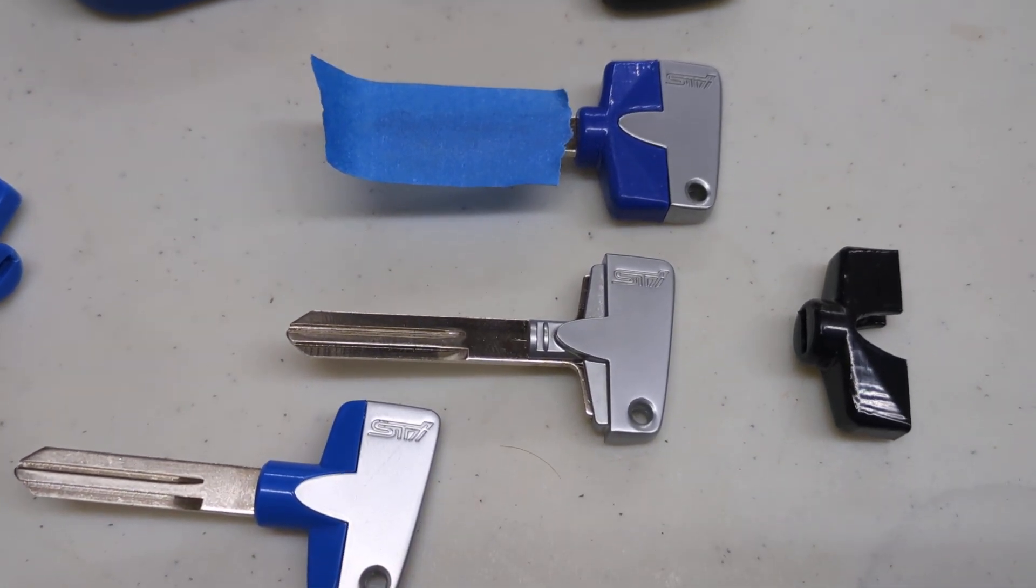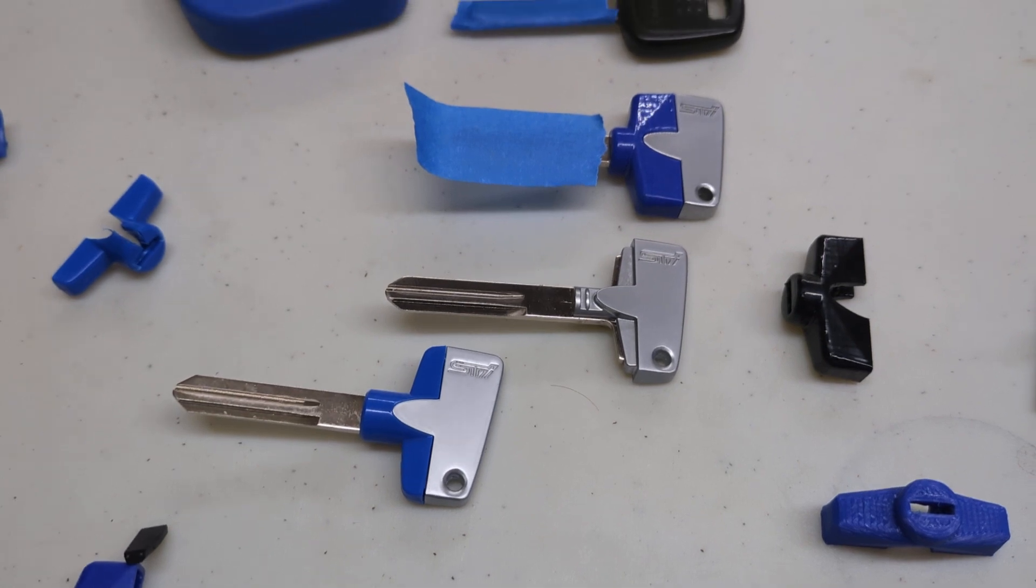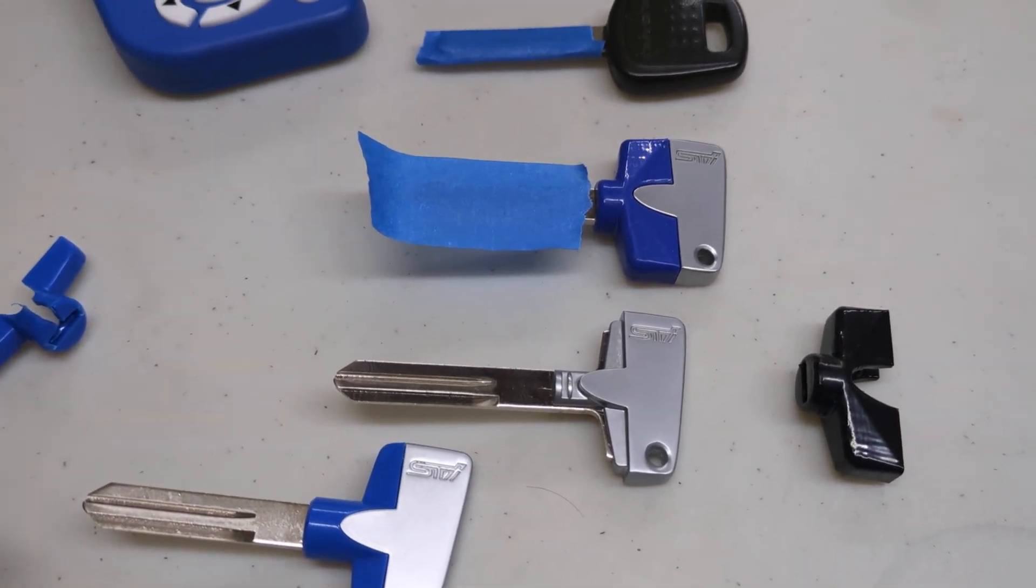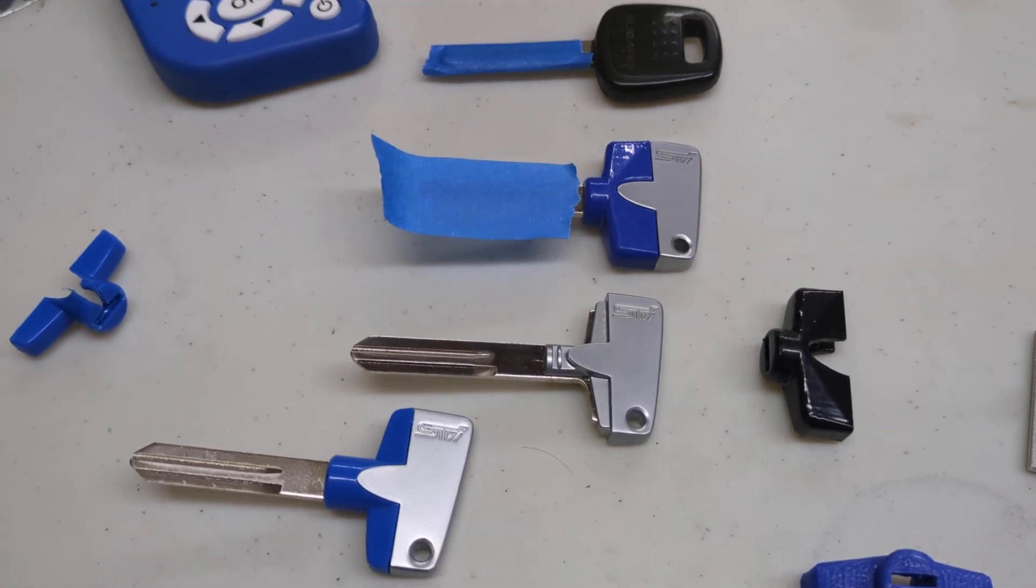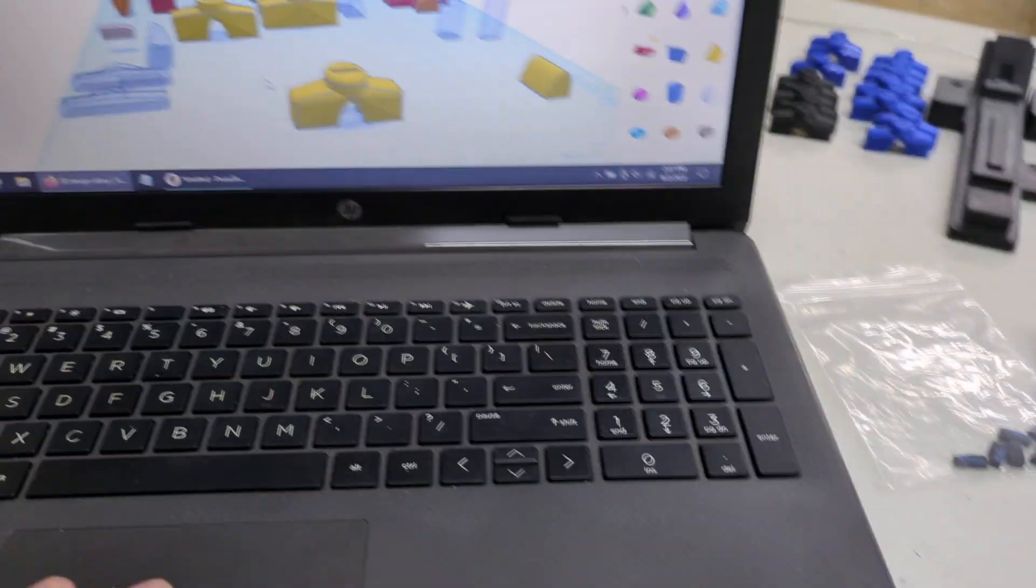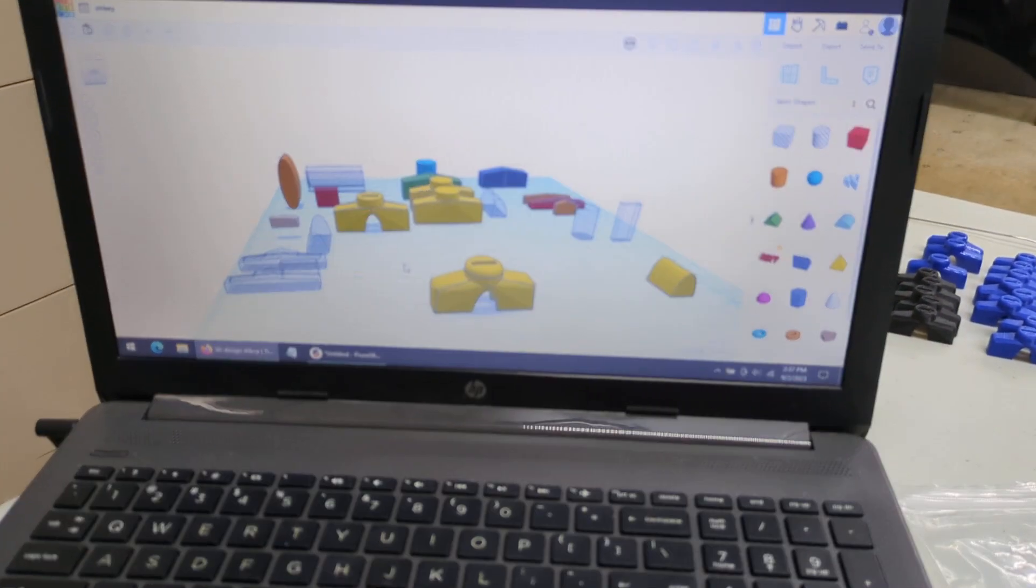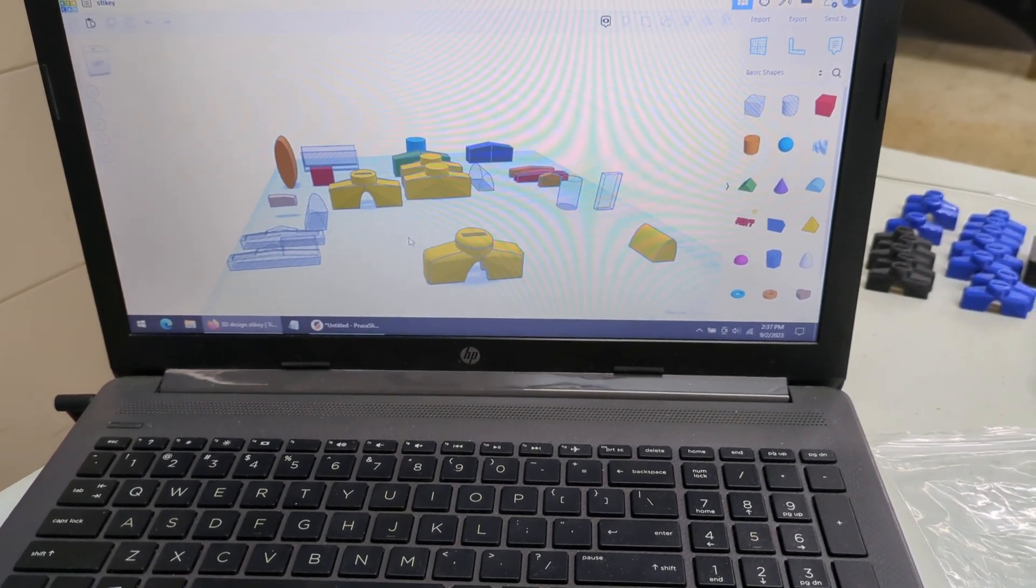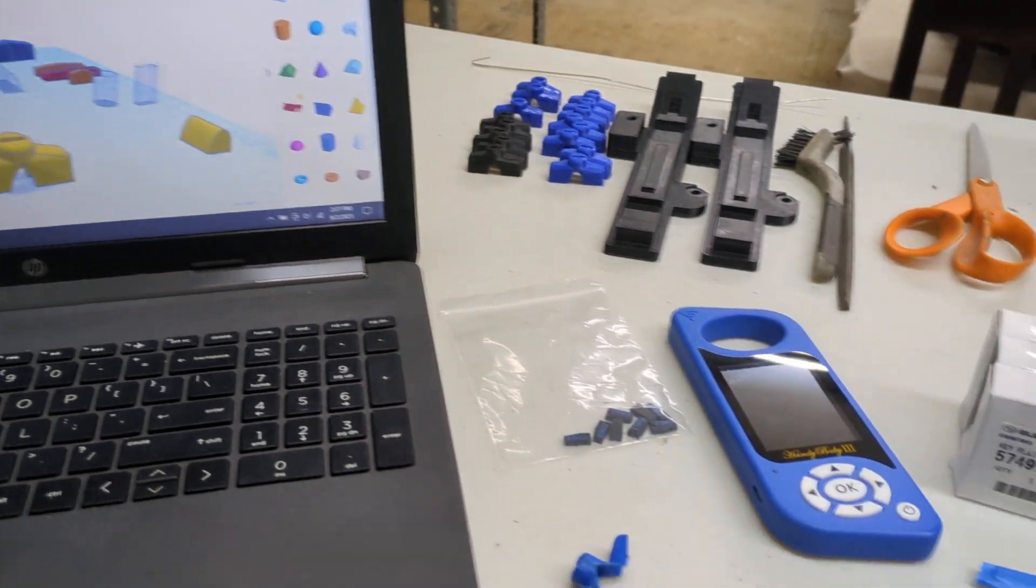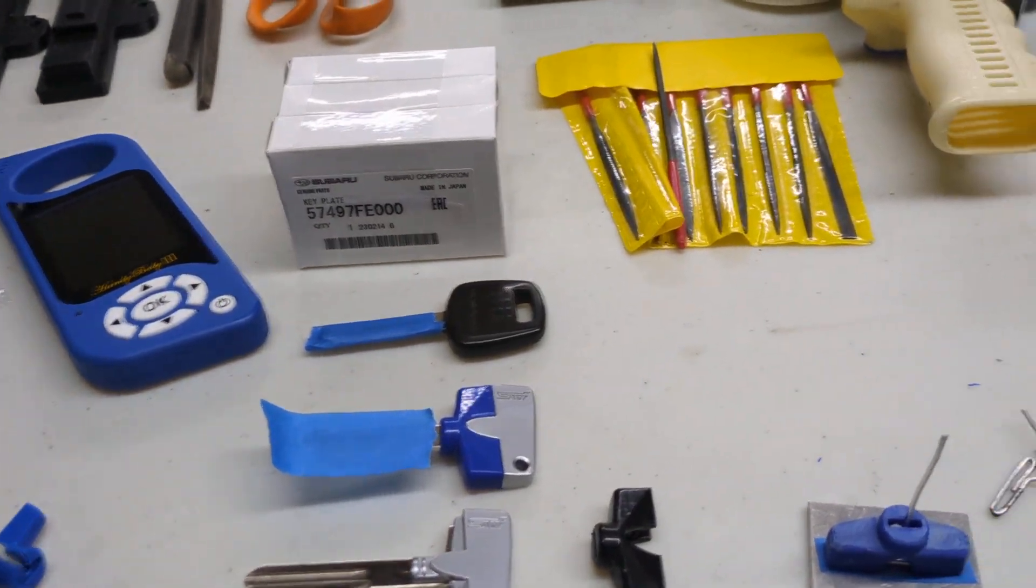So once I got that far, I said I'm going to design something that can slide onto it. It'll replace the blue plastic that's there. It'll be a little bit bigger to house that immobilizer chip. And that's what I did using Tinkercad. I went through about 25 different iterations. It's just basic shapes that you've got to kind of combine, measure, and it's trial and error.